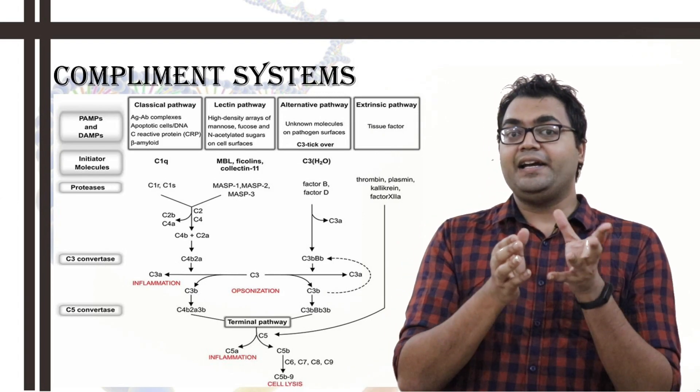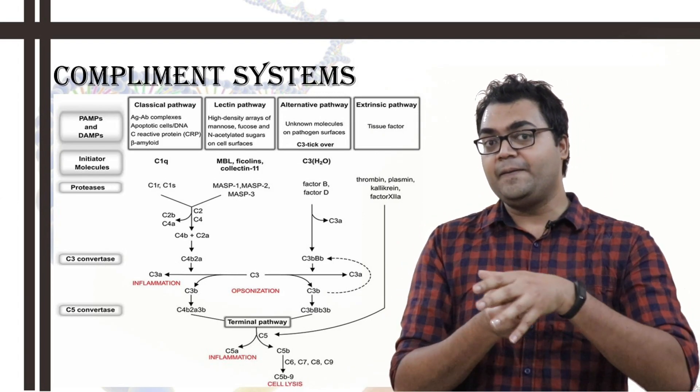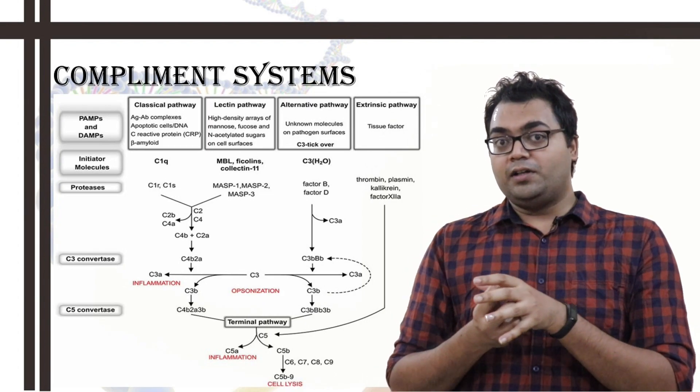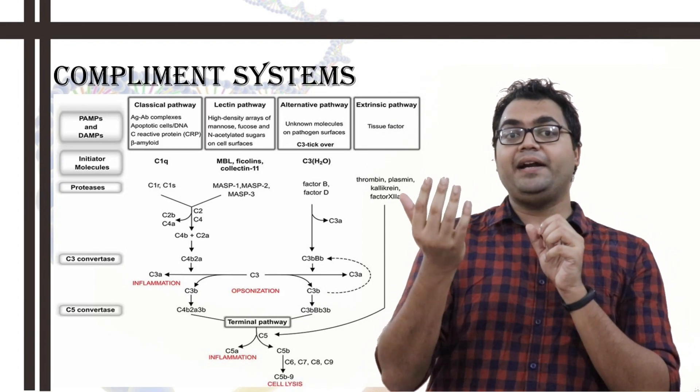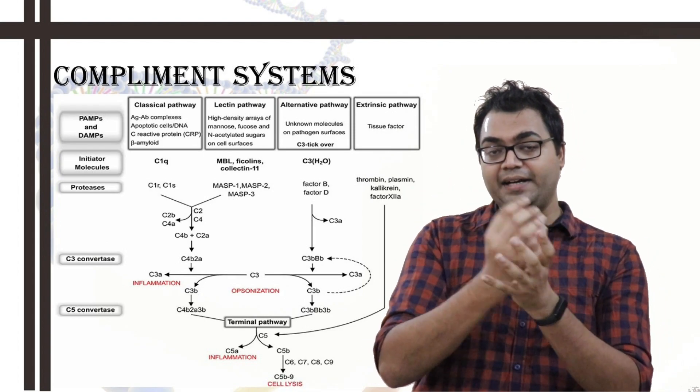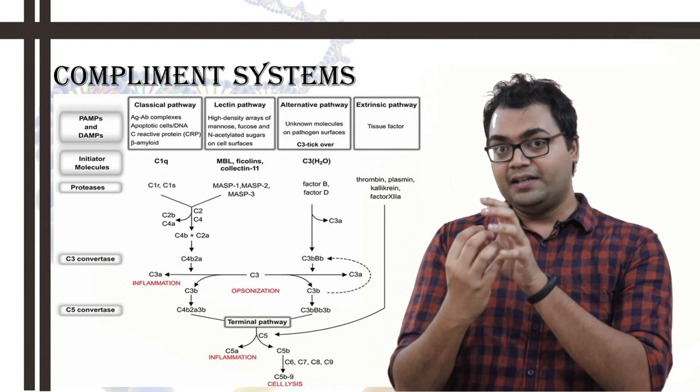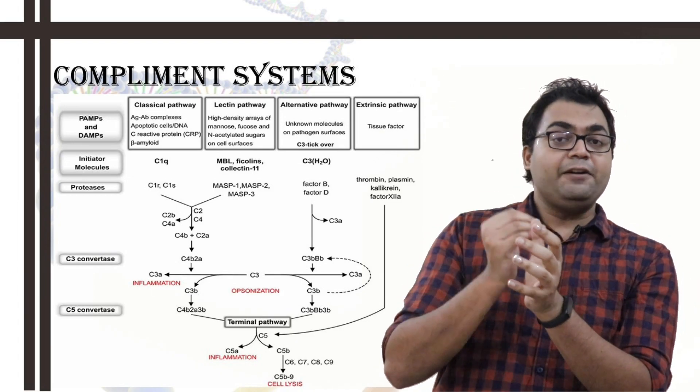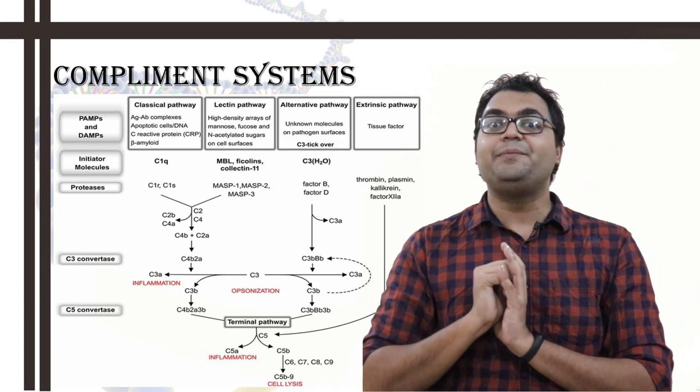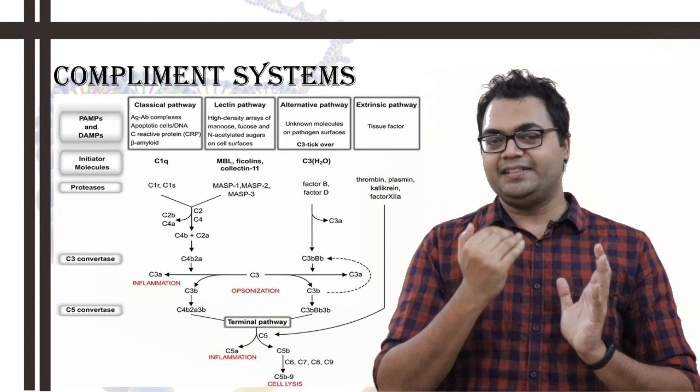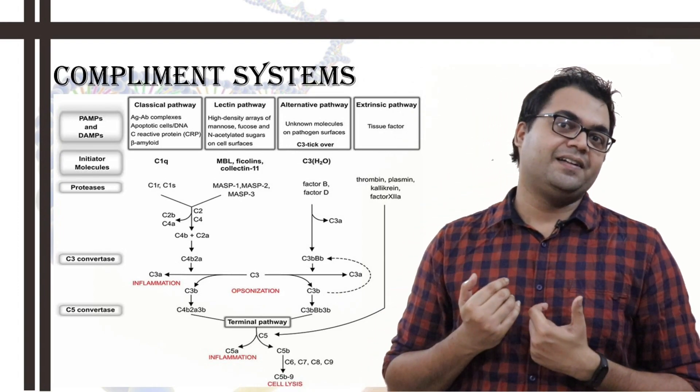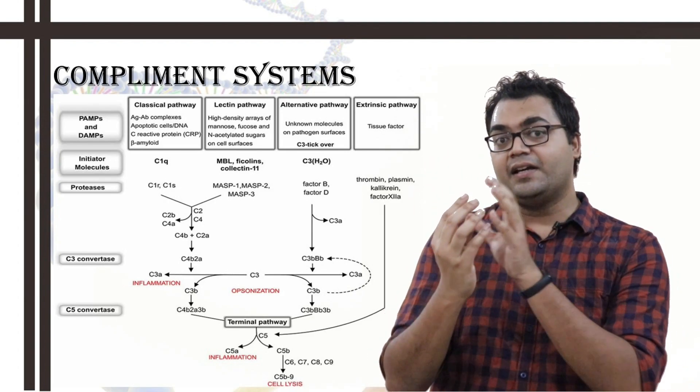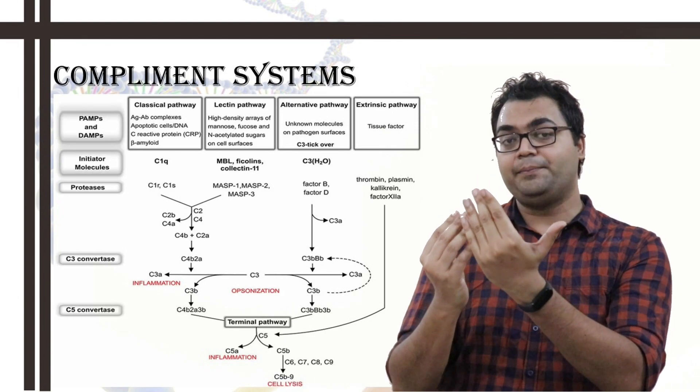Then it can further degrade C3 into C3a and C3b. Now, C3b, being an opsonin, can go and bind to the microbes on the cell wall to their specific ligand. And then after binding to C3b, after the binding of C3b with the microbial ligand on the cell wall, it undergoes a conformational change and then factor B can again bind to C3b. And then factor D can cleave factor B. After factor B comes and binds to the C3b, factor D can cleave factor B.